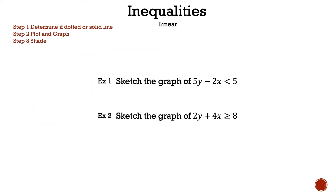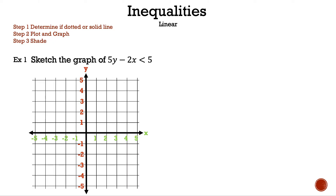Now let's take a look at the examples we're going to be discussing in today's video. Let's take a closer look at example one. Let's read the steps. Step one: determine if dotted or solid line. Step two: plot and graph. Step three: shade. Now let's read the question. Sketch the graph of 5y minus 2x less than 5.